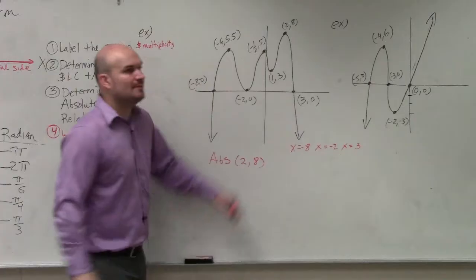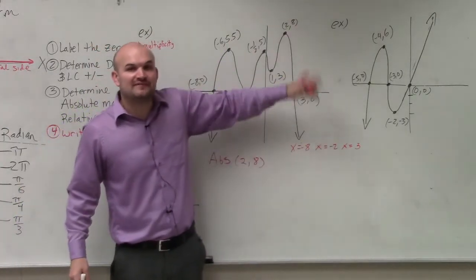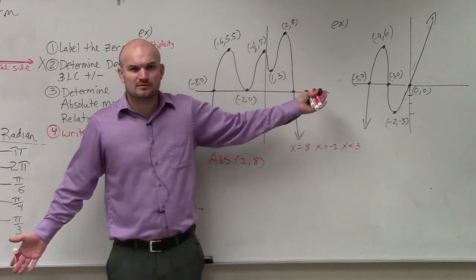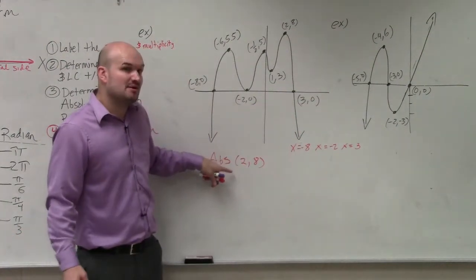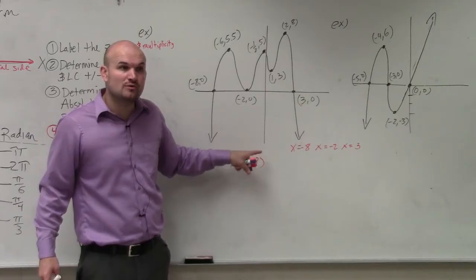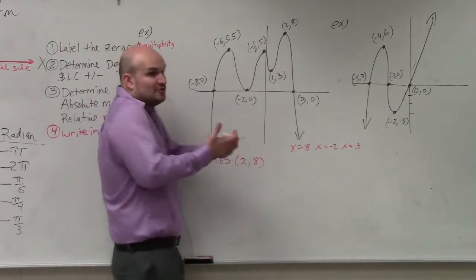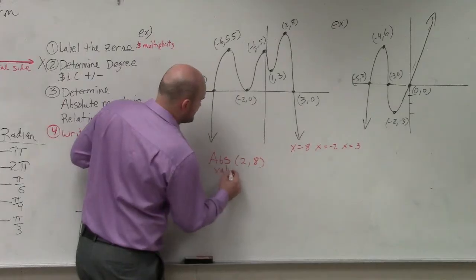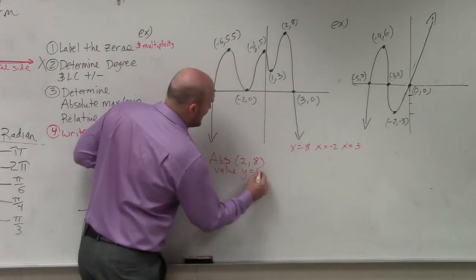Now when we're talking about how high a graph is, we're talking about what, the x-coordinates or the y-coordinates? The y-coordinates, right? So the absolute maximum occurs at the point 2 comma 8, but the value of the absolute max is y equals 8.